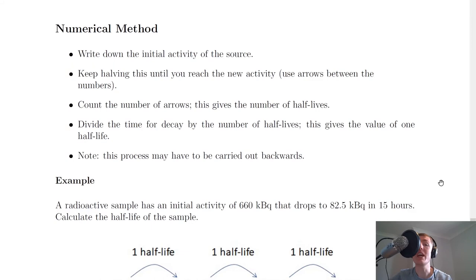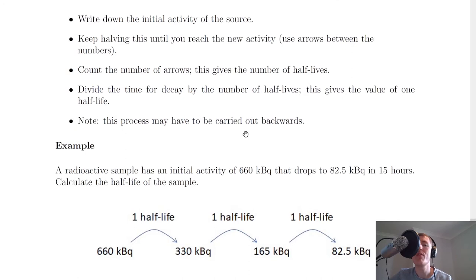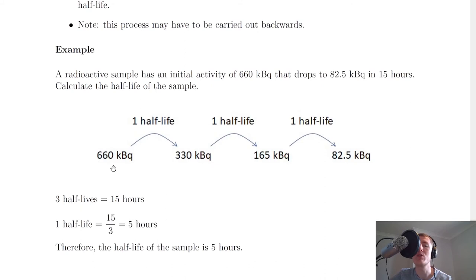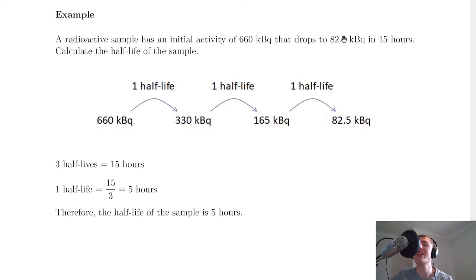The second way to work out the half-life is the numerical method, using numbers and calculations rather than a graph. In this example, a radioactive sample has an initial activity of 660 kBq that drops to 82.5 kBq in 15 hours — calculate the half-life. First, write down the initial activity of 660 kBq, then keep halving it until you reach the final activity: 660 halved gives 330 kBq, 330 halved gives 165 kBq, and 165 divided by 2 gives 82.5 kBq.